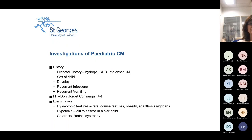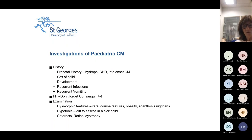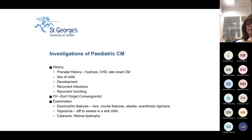We need to think about dysmorphic features — look for coarse features. Some children have obesity, as in Alstrom syndrome, with acanthosis nigricans. They can be hypotonic if we're thinking of a neuromuscular disorder. Eyes can be important — there might be cataracts, as seen in a couple of mitochondrial disorders, and they can have retinal dystrophy. It's very difficult to get a good eye examination in these children.